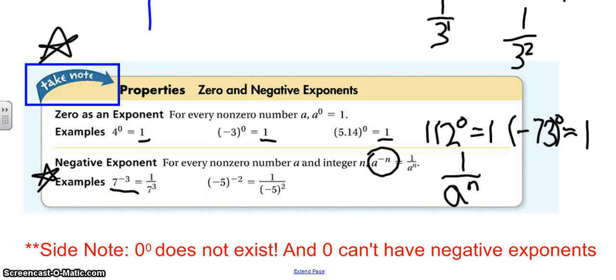Just as a side note, 0 is the exception to both of these rules. So, 0 to the 0 does not exist and 0 can't have negative exponents. It's not allowed to. 0 is the exception to these rules. If either of those rules don't make sense to you, please make a note to ask me a question in class tomorrow while you're working on your problem set.